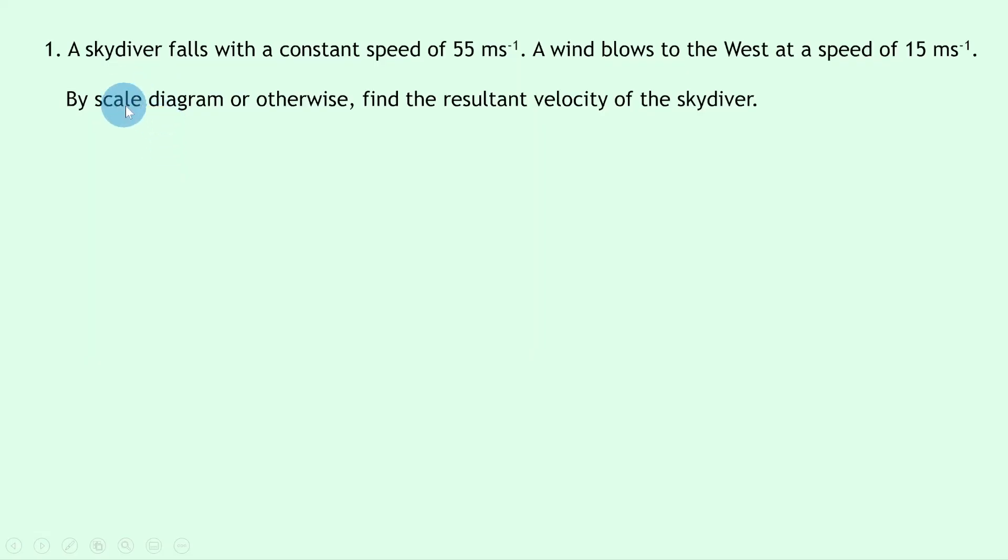So let's get started. In our one and only example here, it says a skydiver falls with a constant speed of 55 meters per second. A wind blows to the west at a speed of 15 meters per second. By scale diagram or otherwise, find the resultant velocity of the skydiver.